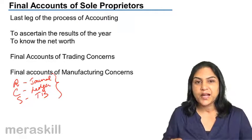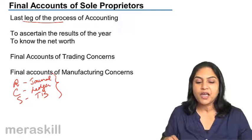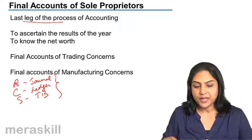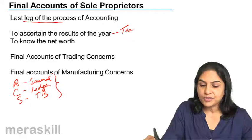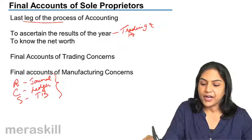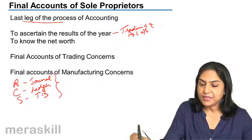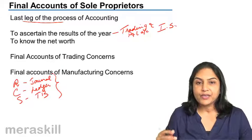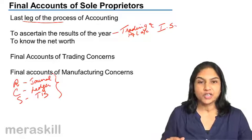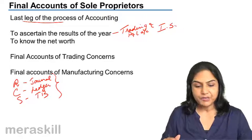Thereafter, we come to the preparation of the final accounts, which is the last leg of the process of accounting. This consists of the trading account and the profit and loss account — which together is nothing but the income statement. The trading account gives us the gross profit, and the profit and loss account gives us the net profit.